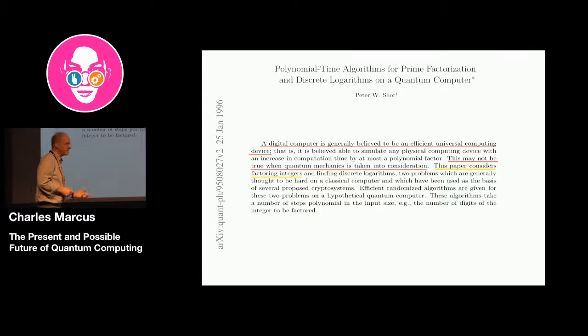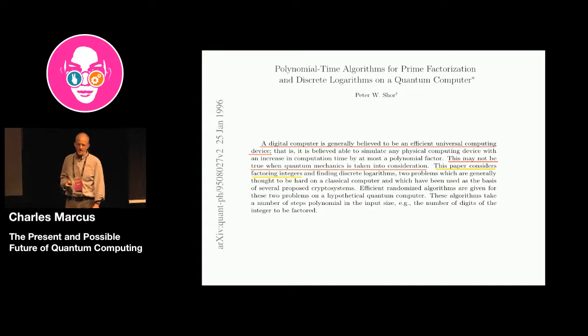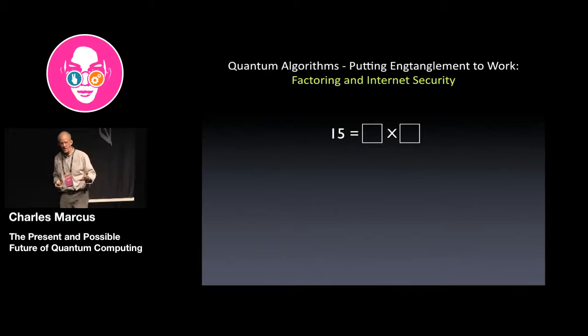A digital computer is generally believed to be an efficient universal computing device. This may not be true when quantum mechanics is taken into consideration. That is, there may be problems that cannot be efficiently simulated on a computer. What this paper considers is a problem which is hard, factoring integers. Now, factoring integers doesn't seem that hard, but it is a hard mathematics problem. And what Peter Shor showed in this paper was that if you had a machine that could do that thing that I talked about in the previous slide, you could solve that problem very fast. So here's the problem. I think you know the problem. The problem is one that's at the heart of the RSA algorithm for secure communication. Two numbers that multiply together to give you, two prime numbers that multiply together to give you a known number.